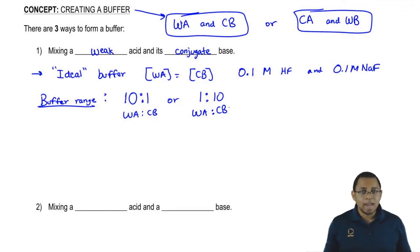A good buffer falls within this range. If it falls outside that range, it'll still be a buffer, it'll just be a very bad buffer. And remember, an ideal buffer is the best buffer. That's when both are the same.